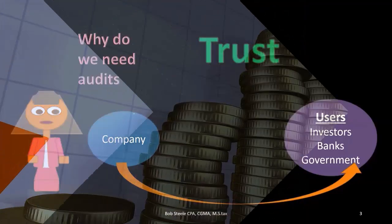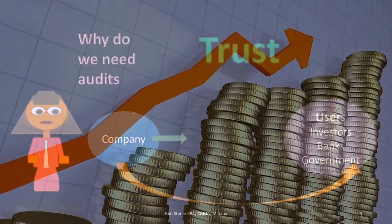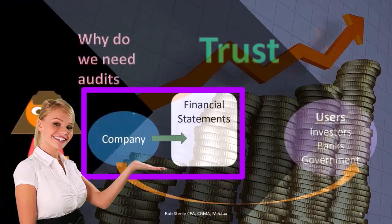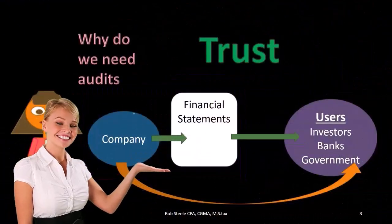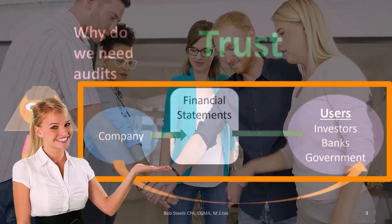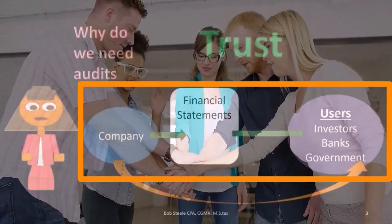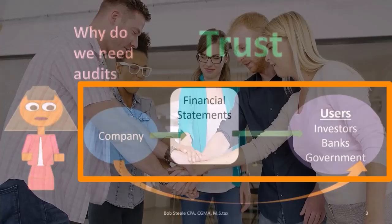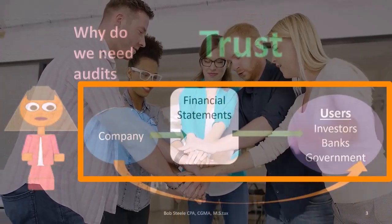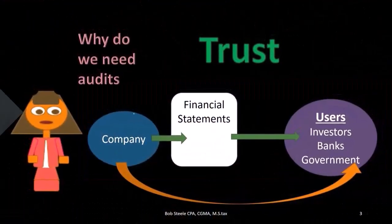So what can a company do to build more trust? Investors, banks, and the government are going to ask for financial statements. They'll say, give us your financial statements — tell us your profitability, tell us how you're doing — and then we're more likely to do business. The investors can put in money, the banks can give the loan, and the government can process their taxes.